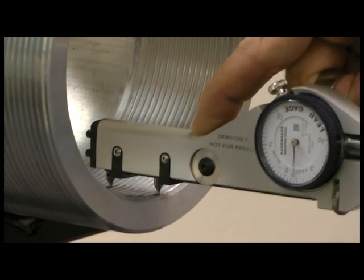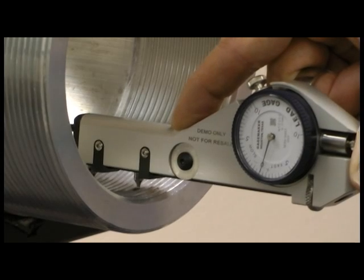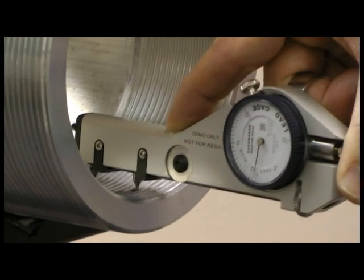Lead gauges inspect both internal and external lead for a variety of thread forms including ACME, stub ACME, and UN threads.